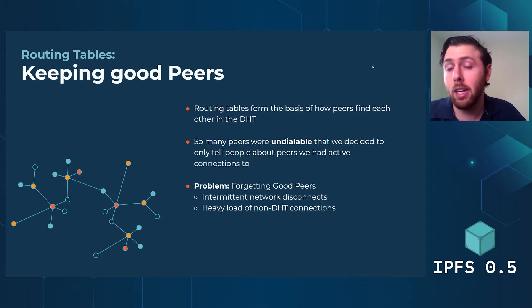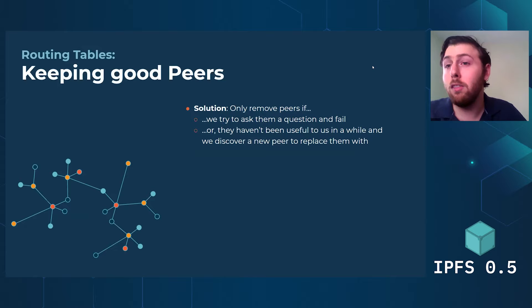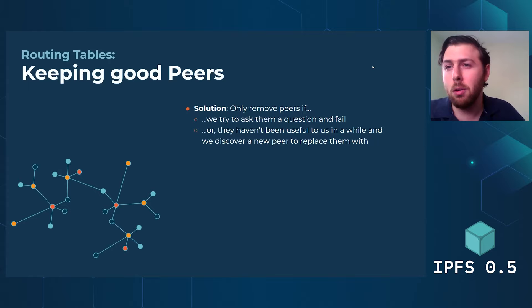So now we only remove peers from our routing table if they've failed us — we've either asked them a question and they've failed, or they've been around a while and every time we ask them a question they just don't give us the responses we need, and we find someone better who might respond in time.